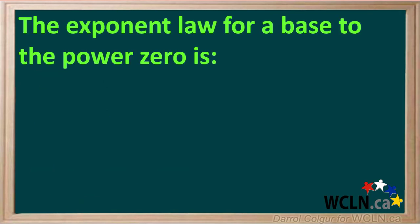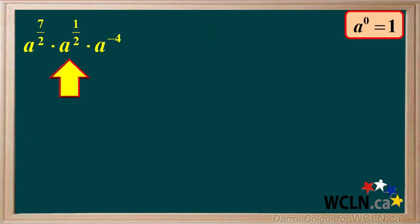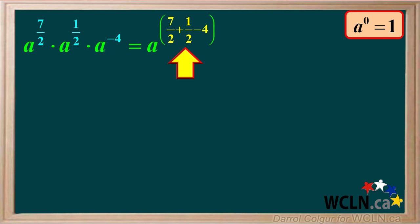The exponent law for a base to a power of 0 is: a to the power of 0 is equal to 1. In other words, any number raised to the power of 0 is equal to 1. We have a to the power of 7 halves times a to the power of 1 half times a to the power of negative 4. When we multiply the same base we add the exponents, so we get a to the power of 7 over 2 plus 1 over 2 minus 4.